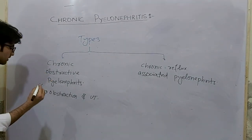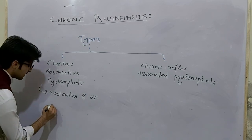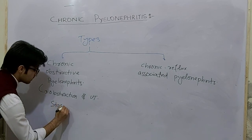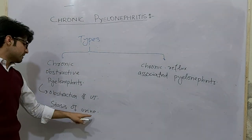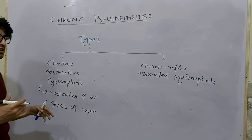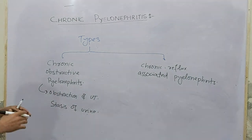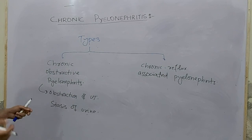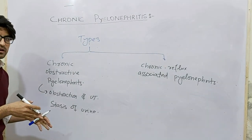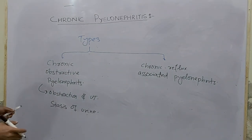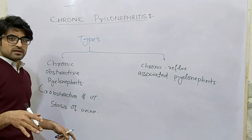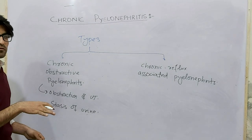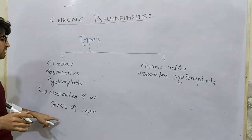Why does obstruction of the urinary tract cause urinary tract infections? First, obstruction causes stasis of urine. We have already studied that if there is stasis of urine, the normal flushing mechanism of the bladder is lost. The organisms will not be flushed from the urinary tract, allowing them to attach to the mucosa and cause infection. Second, stasis provides a medium for the organism to grow in the urinary tract.